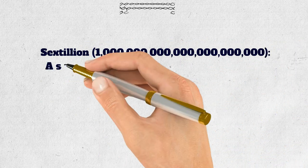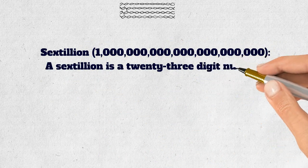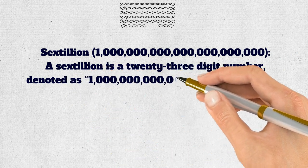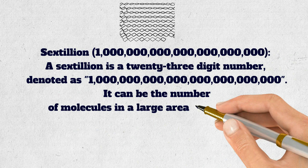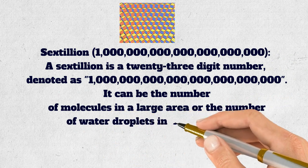Sextillion. A sextillion is a 23-digit number, denoted as 1,000,000,000,000,000,000,000,000. It can be the number of molecules in a large area or the number of water droplets in a huge volume.